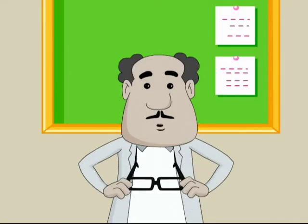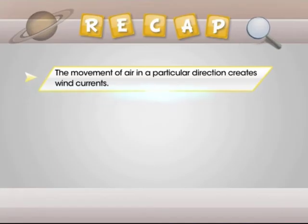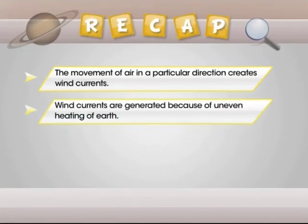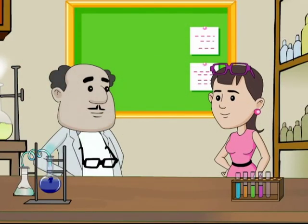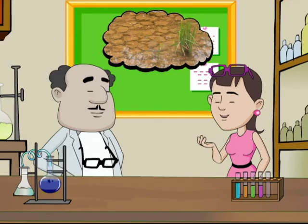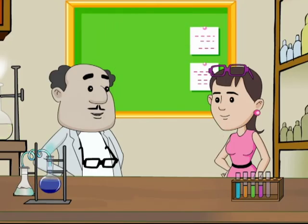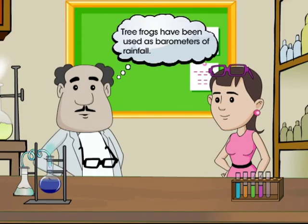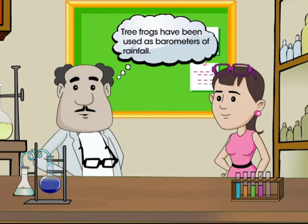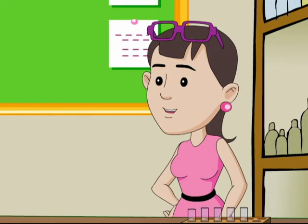Alright friends, time to take a memory jog now. Let's quickly recapture the learnings from today's session. In this module, we have learnt the following: The movement of air in a particular direction creates wind currents. Wind currents are generated because of uneven heating of Earth. Unequal heating of land and oceans causes summer and winter monsoons. You know, tree frogs have been used as barometers of rainfall as they often respond to approaching rain by croaking.